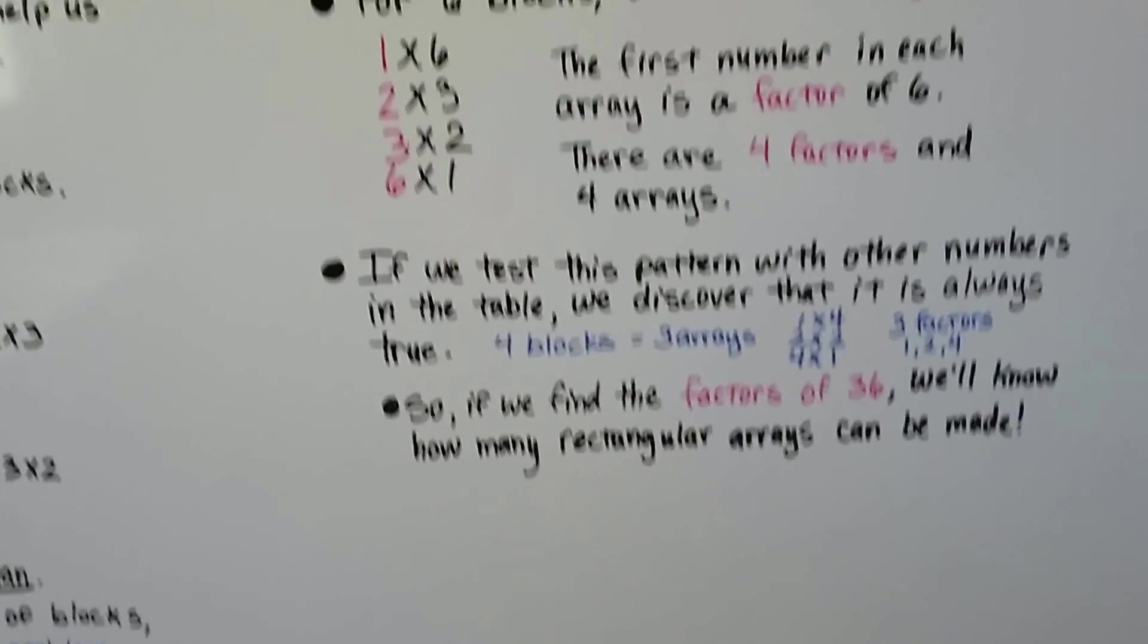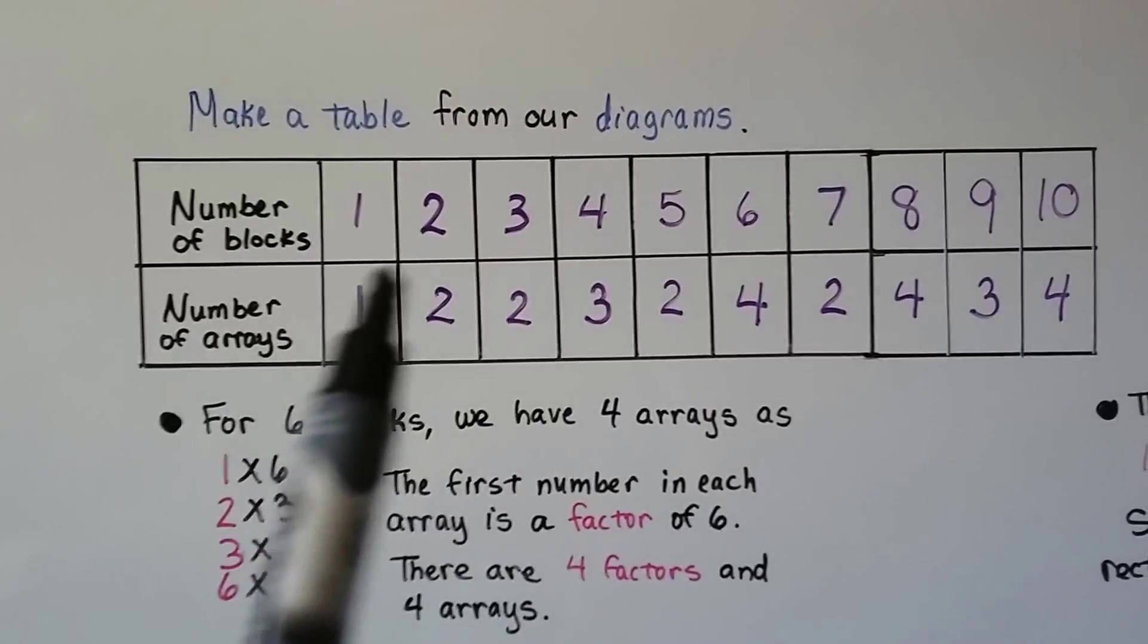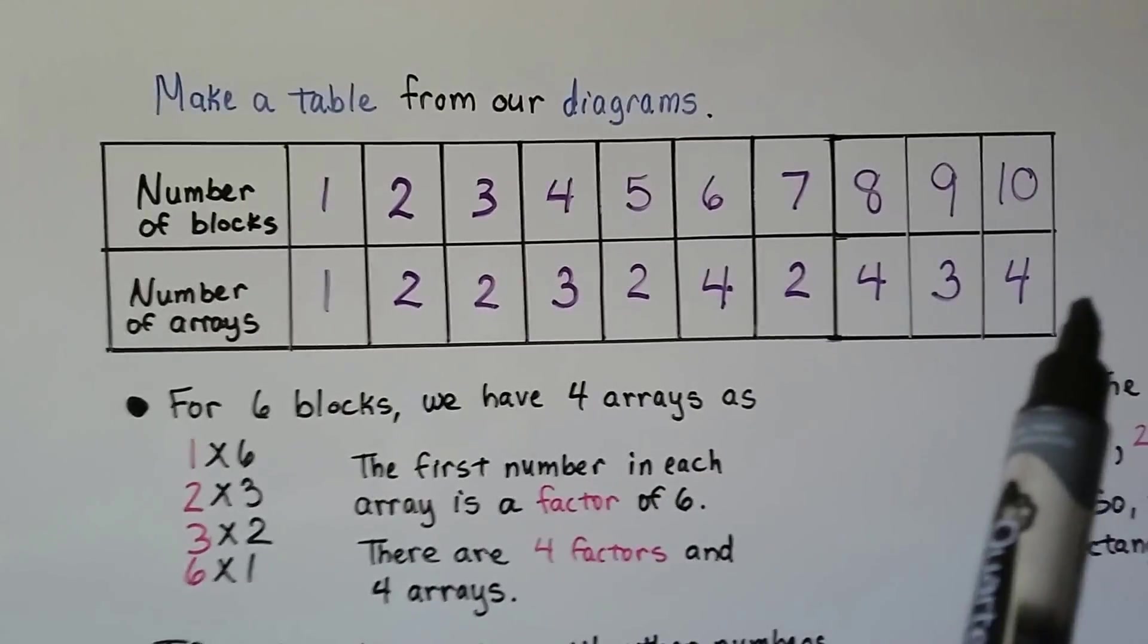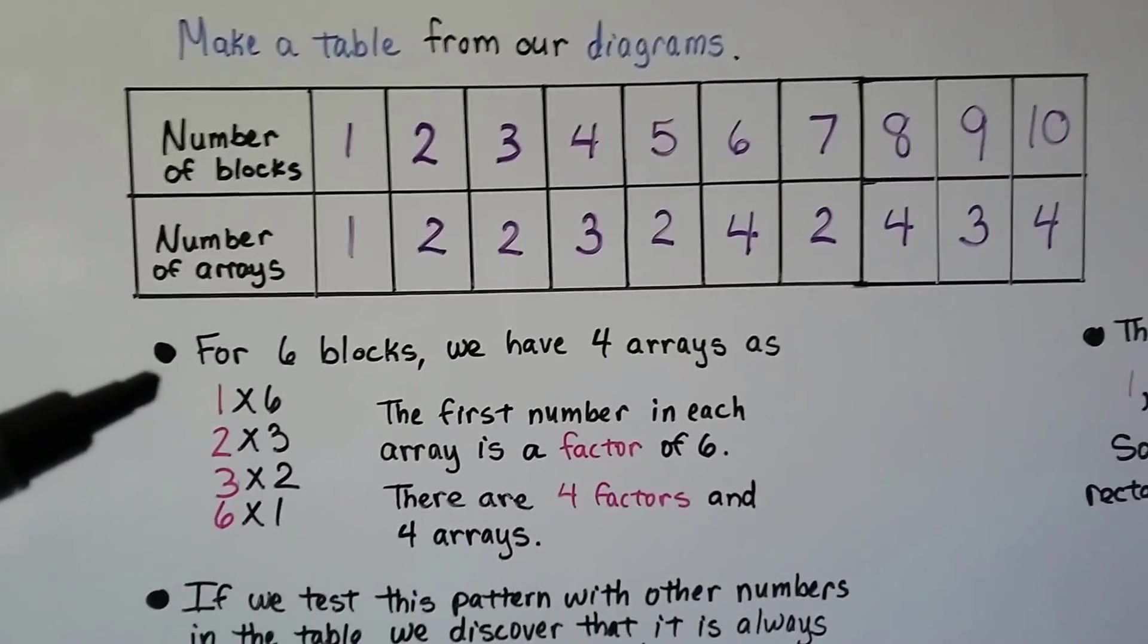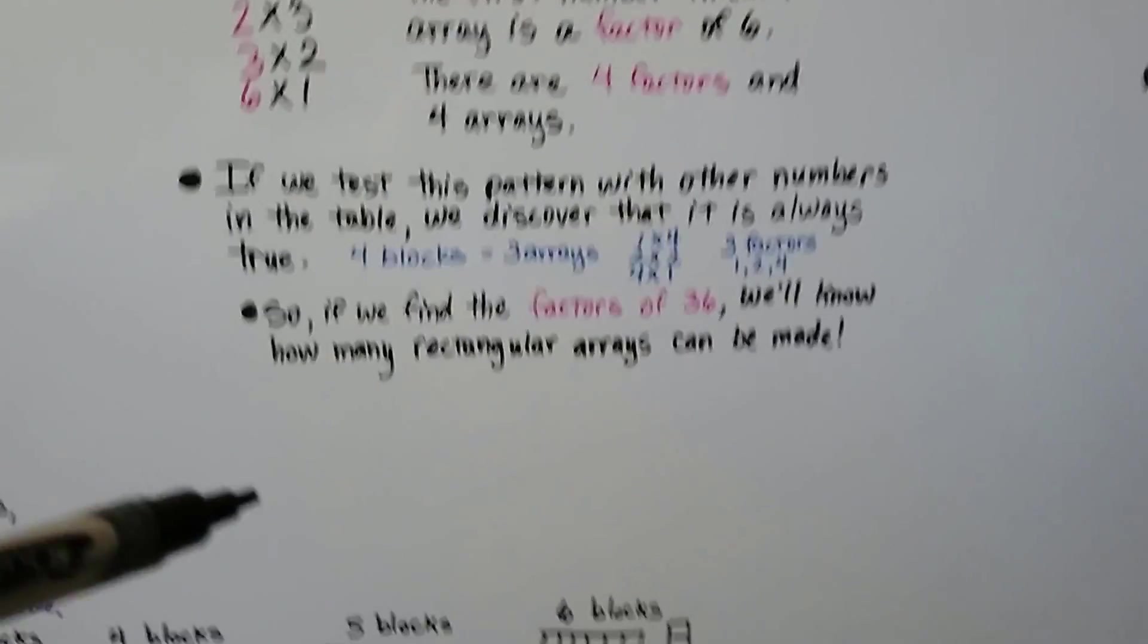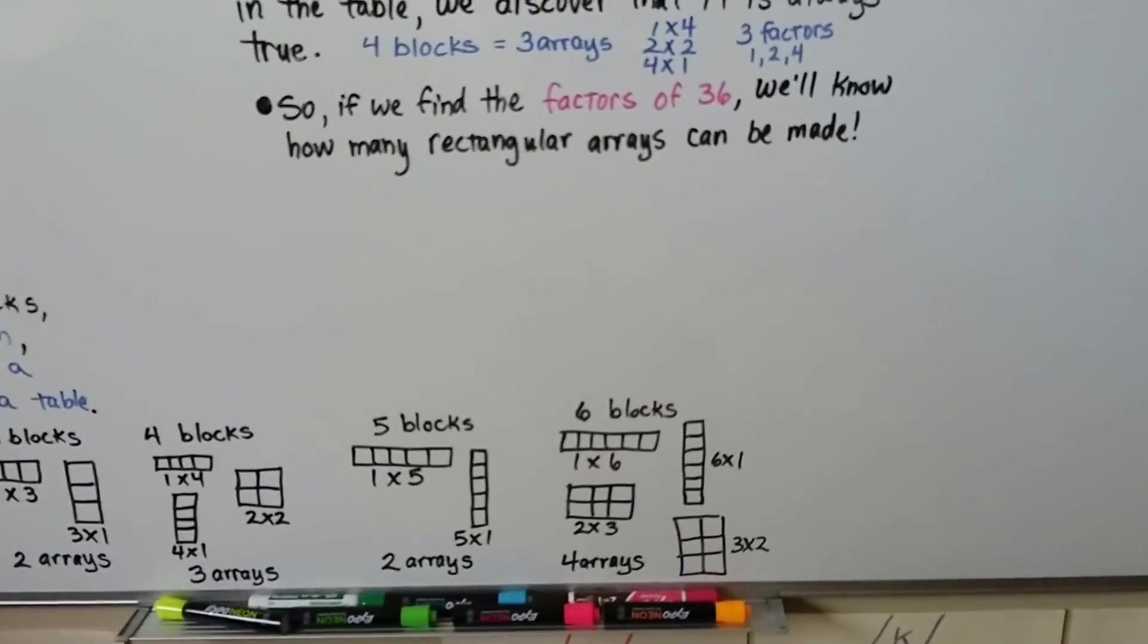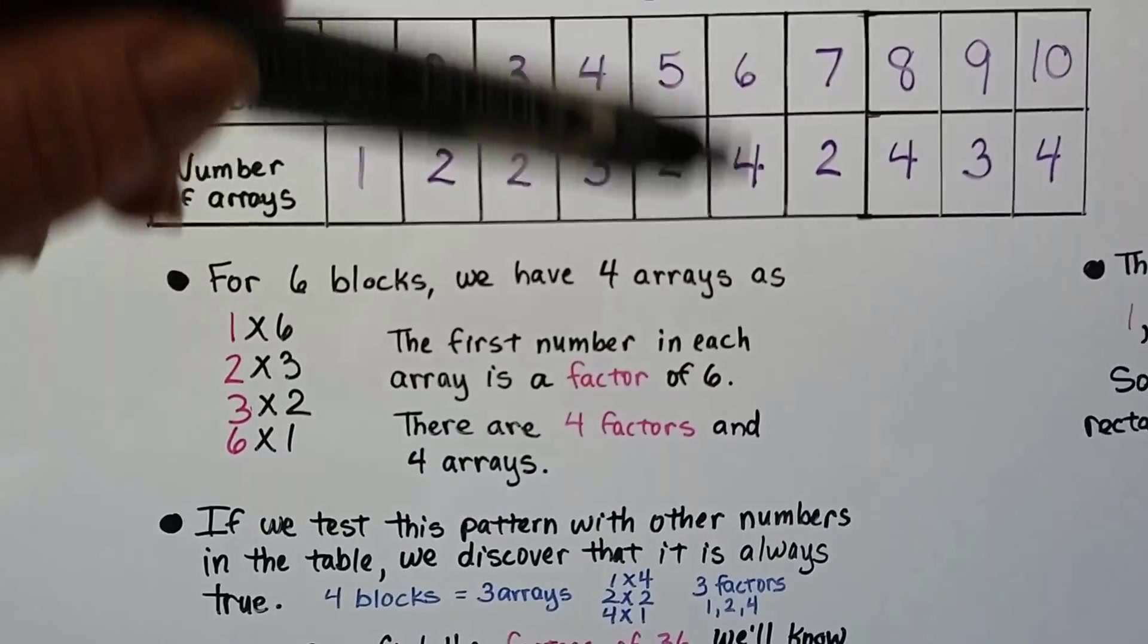So we make a table from our diagrams, and this is what we end up with. Here's the number of blocks, we're going up to 10, and the number of arrays that we can make. So for 6 blocks, we have 4 arrays. Remember, we've got a 1 by 6, a 6 by 1, a 2 by 3, and a 3 by 2. So there's 4 of them.